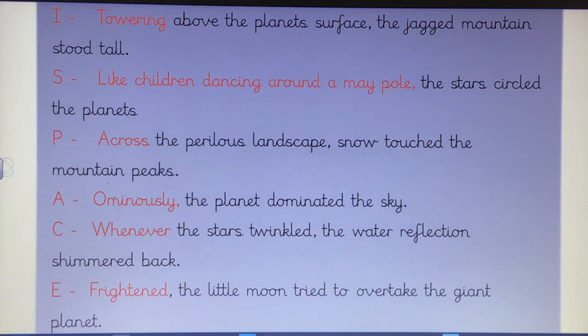S, so for my simile, I've got like children dancing around a maypole, the stars circled the planets. Okay, I have forgotten my full stop there. Naughty Miss Ambler. Hopefully you spotted that as well. And I'm not going to see any of those in your work. So like children dancing around a maypole is my simile. And then what I'm describing there is the stars circling the planets.